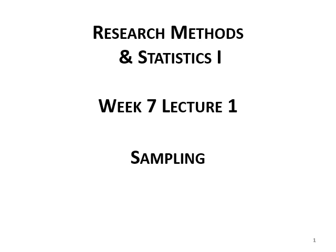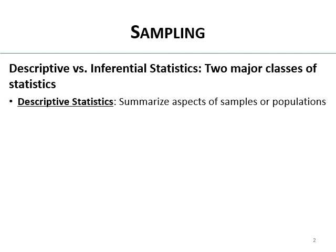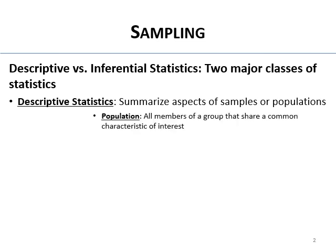Hello everyone, Week 7 Lecture 1 — we're going to talk about sampling. First, let's talk about descriptive versus inferential statistics, which are the two major classes of statistics. Descriptive statistics summarize aspects of samples or populations — they describe things.